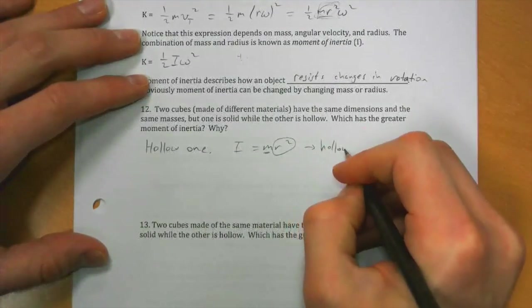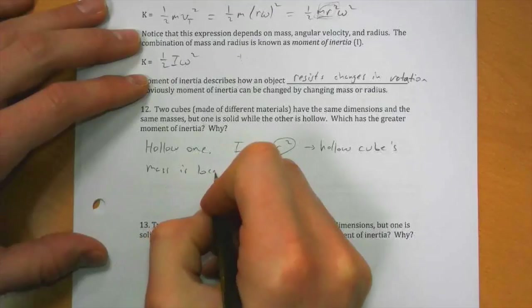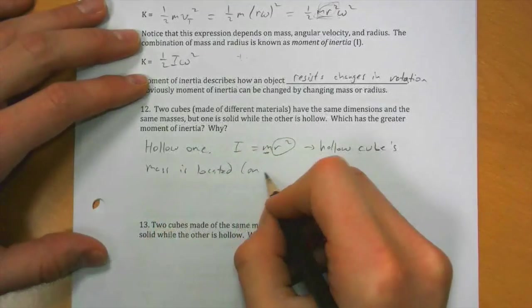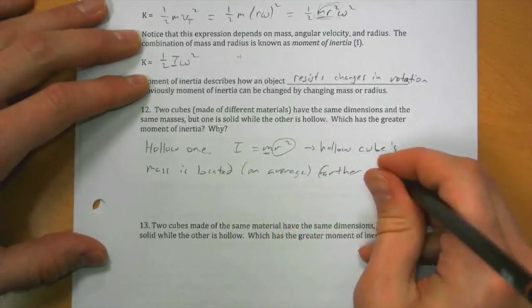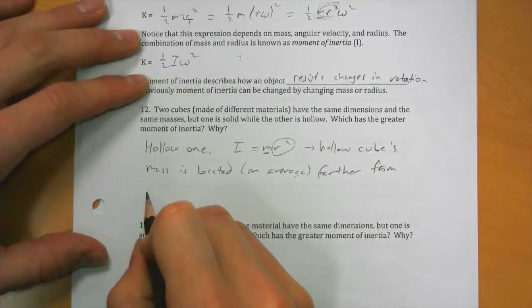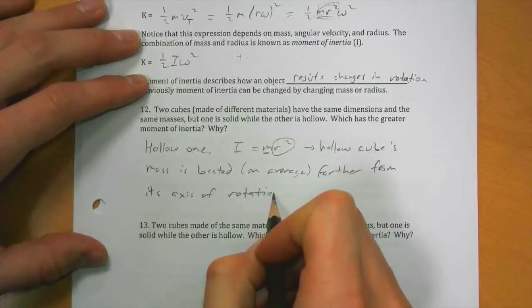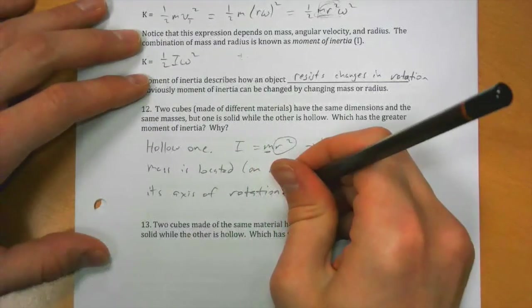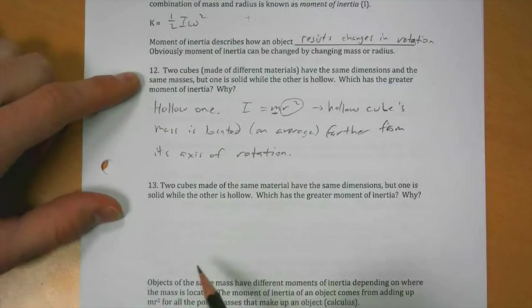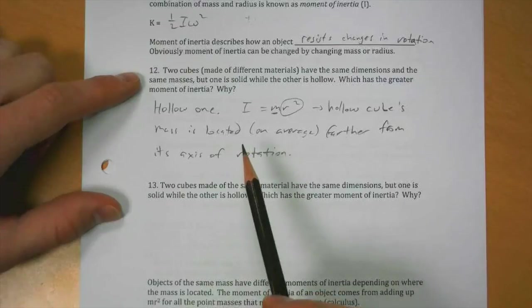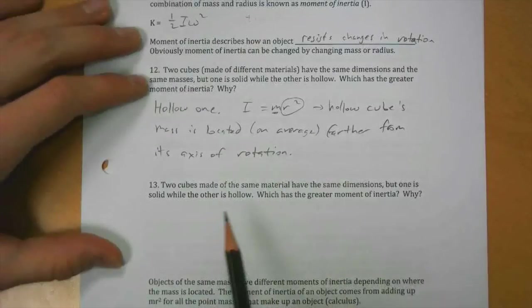The hollow cube's mass is located, on average, farther from its axis of rotation. So anytime you have a hollow thing versus a solid thing, the hollow thing has the greater moment of inertia, if it has the same mass, because that mass is located farther out from the middle.